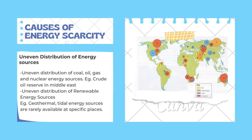The next factor which causes energy scarcity is uneven distribution of resources. The uneven distribution of coal, oil, gas, and nuclear energy resources — for example, crude oil reserves in the Middle East — as well as uneven distribution of renewable energy resources such as geothermal and tidal energy, which are only available at specific coastal areas. Thus, energy cannot be distributed to many regions which don't have any energy resources.